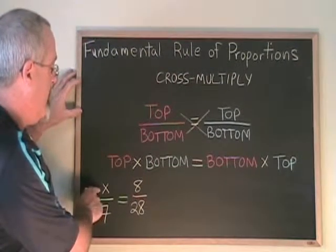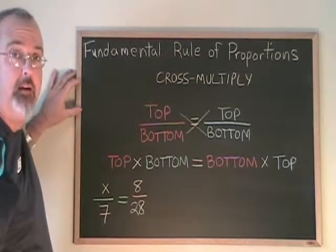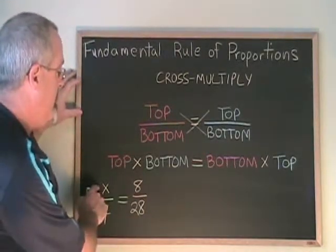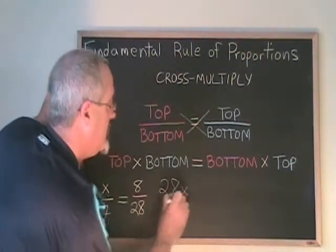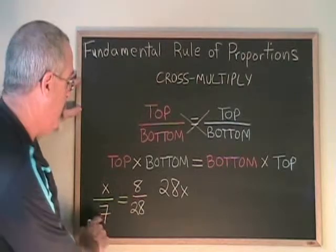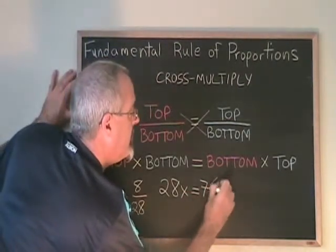Here we have a top of x, a bottom of 7, a top of 8, a bottom of 28. Top times bottom means x times 28. I'll write that as 28x. Bottom times top means 7 times 8, so I put equals and 7 times 8.